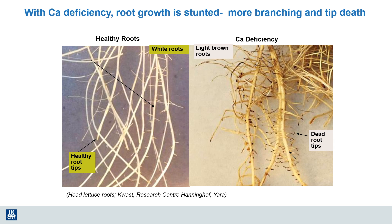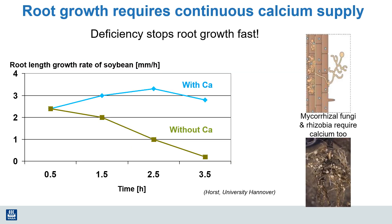Roots can't store excess calcium, but they need a continual supply. This example shows the rate of soybean root growth with and without an adequate calcium supply — root growth almost stops completely when the calcium supply is withdrawn, just within a few hours. In addition to root growth, other important rhizosphere processes are impacted by a shortage of calcium, such as the association with mycorrhizal fungi and the ability of rhizobia to fix nitrogen for the plant.